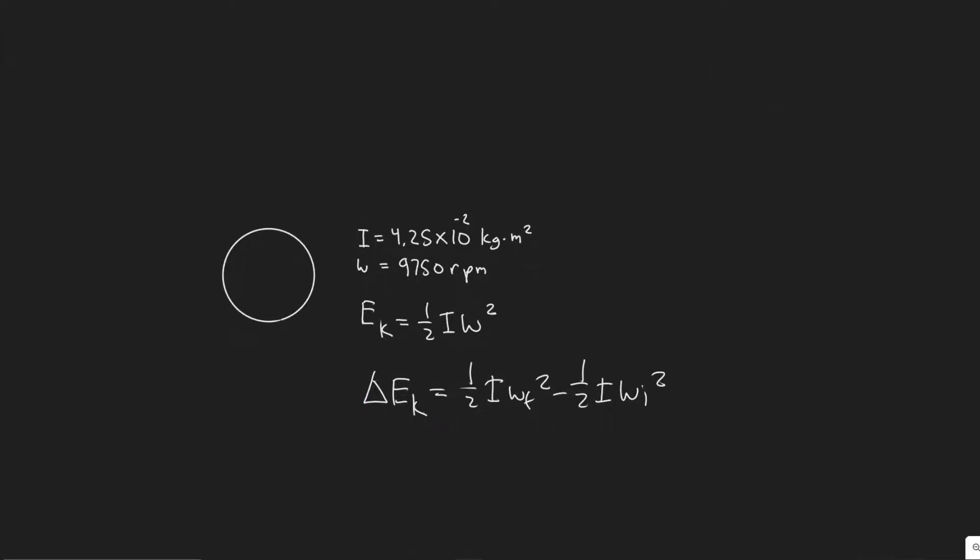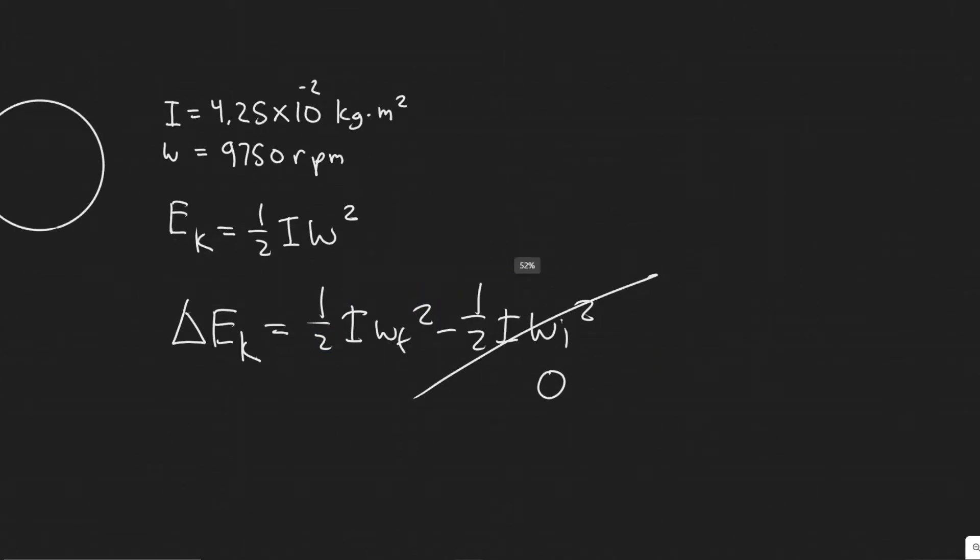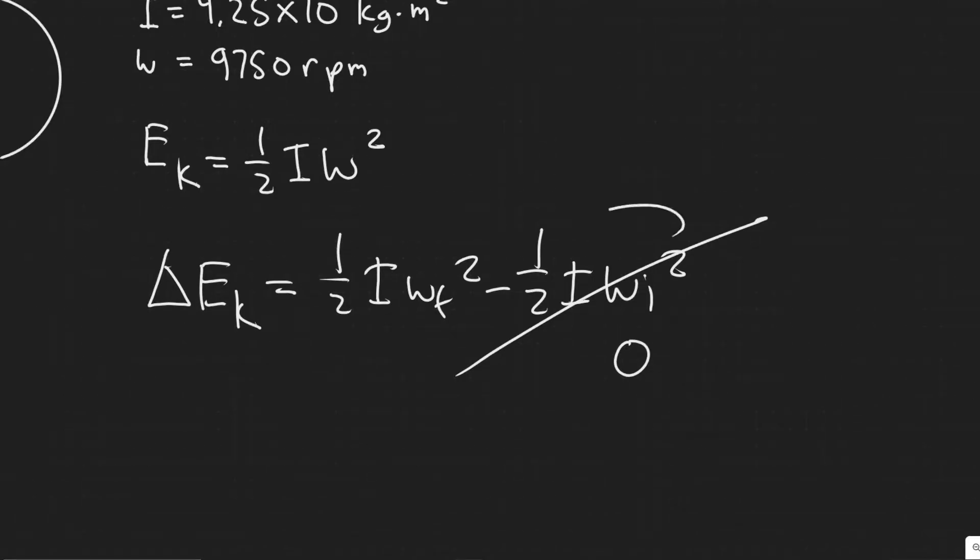We're trying to find how much energy this takes to get from the initial to final state. Initially it starts from zero, so the initial value is zero. To find the change, you do final minus initial, but the inertia and one-half are constants. So you only have to subtract the angular velocities. Since it starts from zero initially, the change in energy